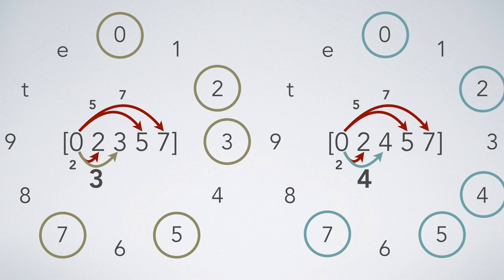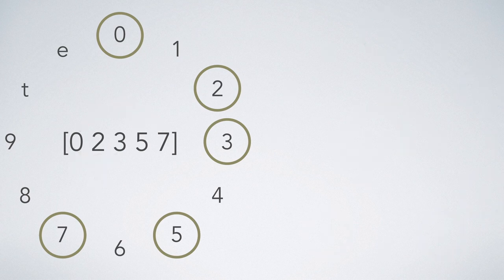Therefore, the prime form of this pitch class set is 0, 2, 3, 5, 7, which is indicated by the parentheses.